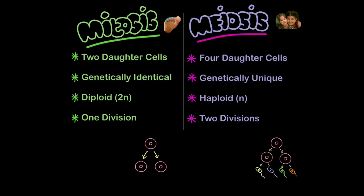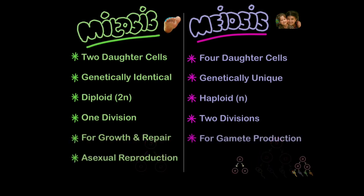Mitosis involves one division of the parent cell. Whereas meiosis involves two divisions, which you can see here. One division to produce two cells, then another division to produce four cells.